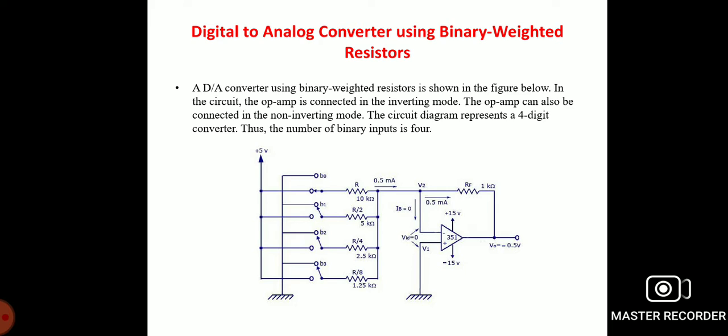The circuit basically works as a current to voltage converter. When B0 is closed, it is connected directly to positive 5 volts, and the voltage across R equals 5 volts. The current through R equals 5V divided by 10 kΩ, which is 0.5 mA. The current through the feedback resistance Rf equals 0.5 mA. Since input bias current Ib is negligible, the output voltage is 1 kΩ × 0.5 mA = −0.5 V.